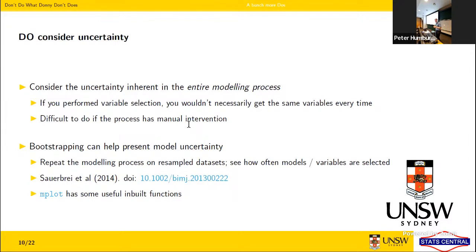The question was: isn't it better to use manual intervention if it includes substantive subject knowledge instead of just letting an automated program do the work? I think that is true, but it's still important to consider the uncertainty that happens before you get to that point. One idea is bootstrapping — resampling your datasets, repeating the whole modelling process, and seeing what happens: how many times you get the same variables or different sets. This is difficult when the process has manual intervention.